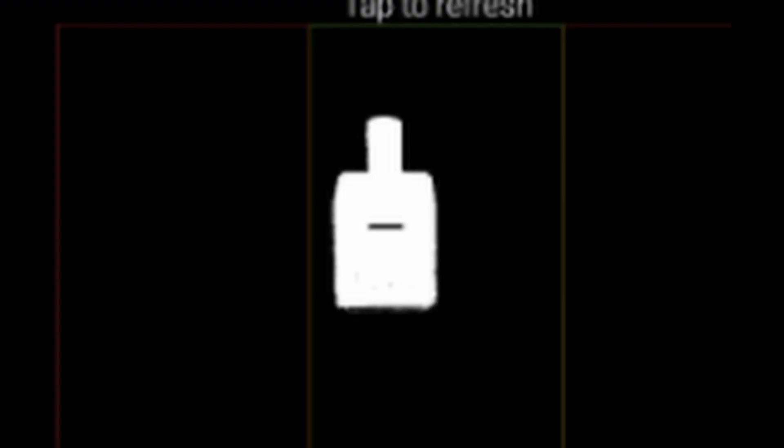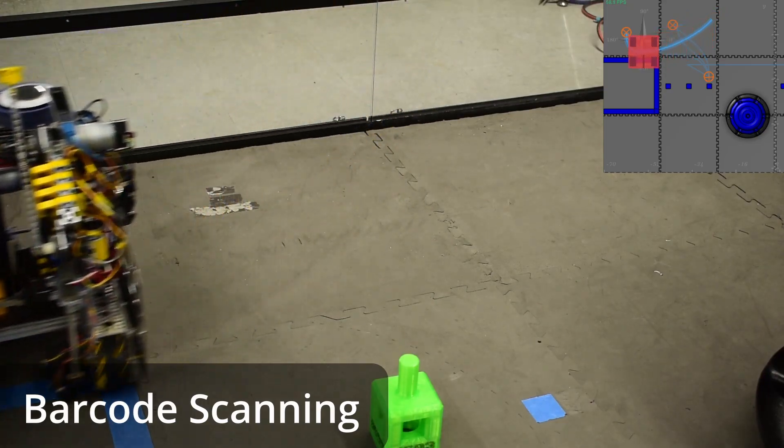To begin the autonomous, the robot looks for the shipping element by looking for image pixels that are the same color as the shipping element in each third of the screen.